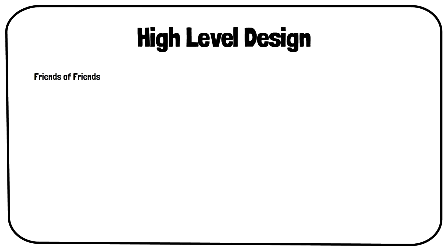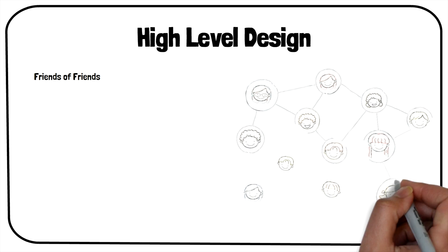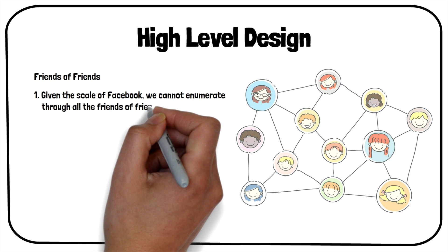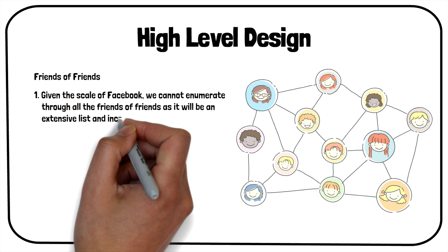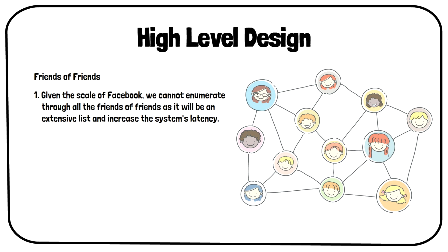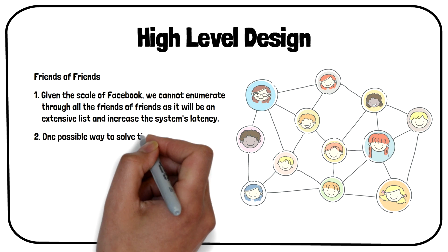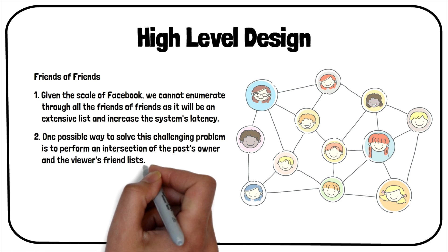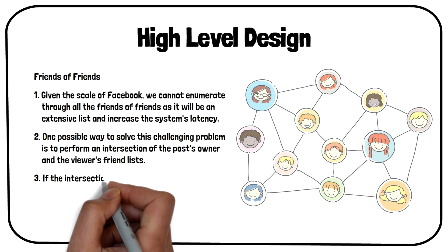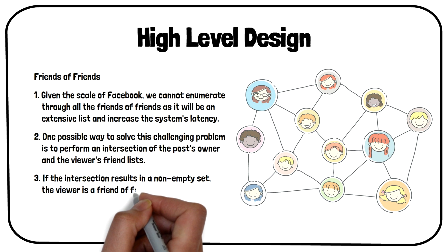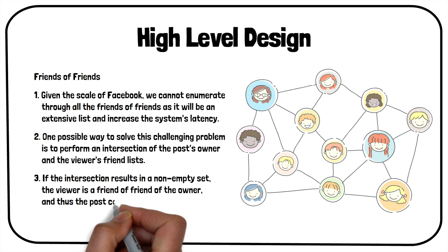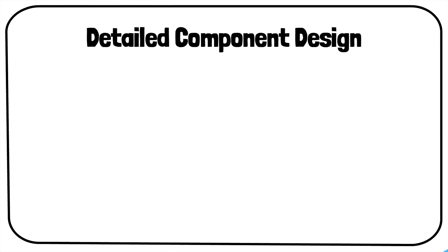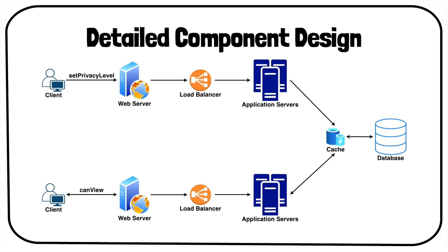Implementation for friends of friends is an excellent follow-up for this question. Given the scale of Facebook, we cannot enumerate through all friends of friends as it will be an extensive list and increase system latency. One possible solution is to perform an intersection of the post owner's and the viewer's friend lists. If the intersection results in a non-empty set, the viewer is a friend of a friend of the owner, and the post can be displayed.